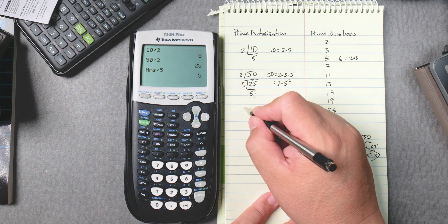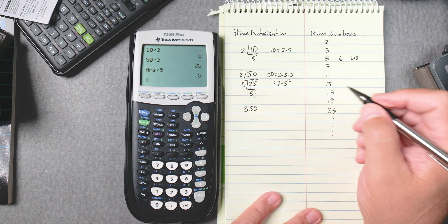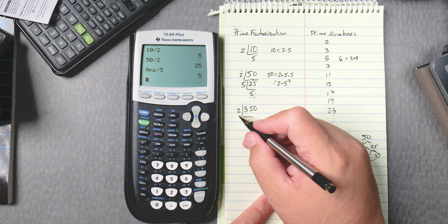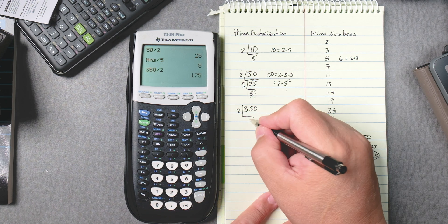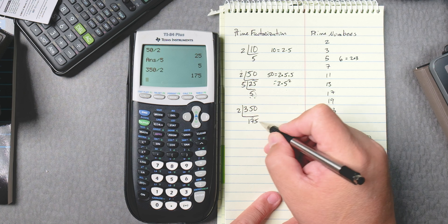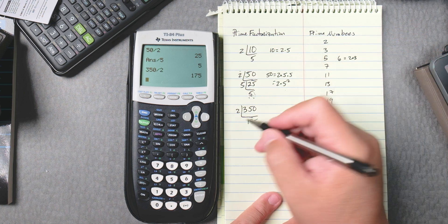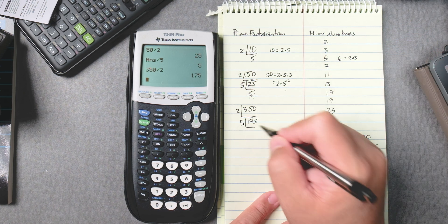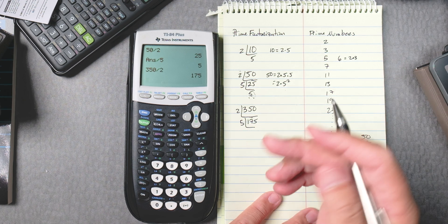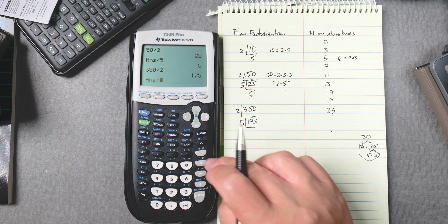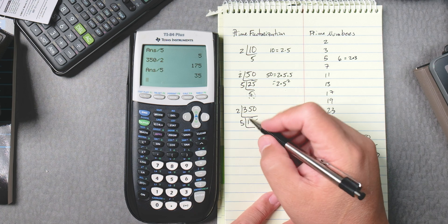Let's do 350. We know it ends in 0, so 2 goes into 350, 175 times. This ends in 5, so we can use 5. You could use 3, you'll find out it doesn't work, but 5 will work. So we divide by 5, 35.